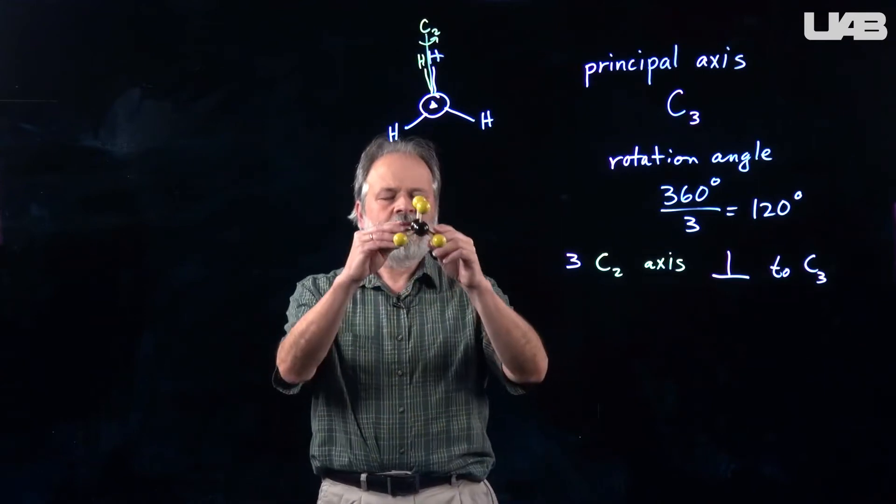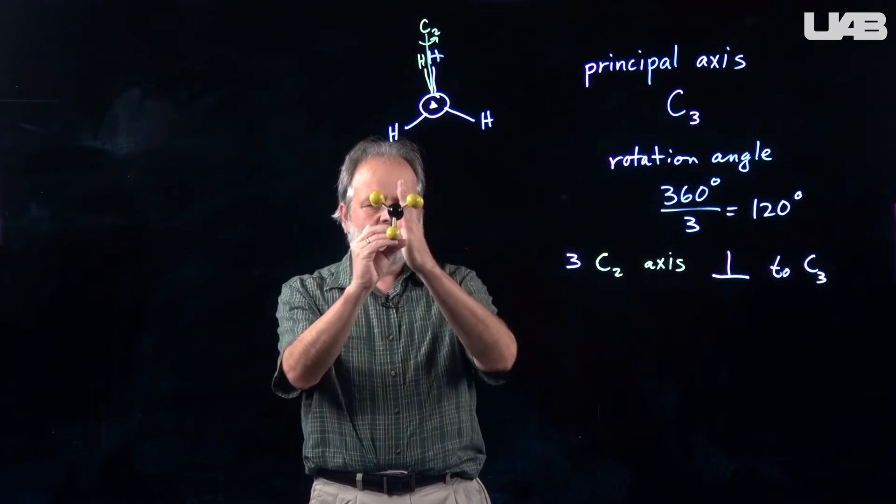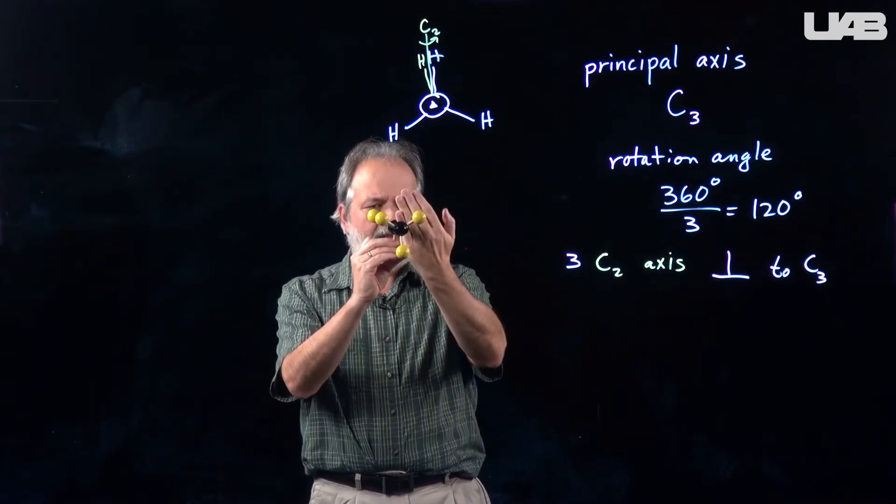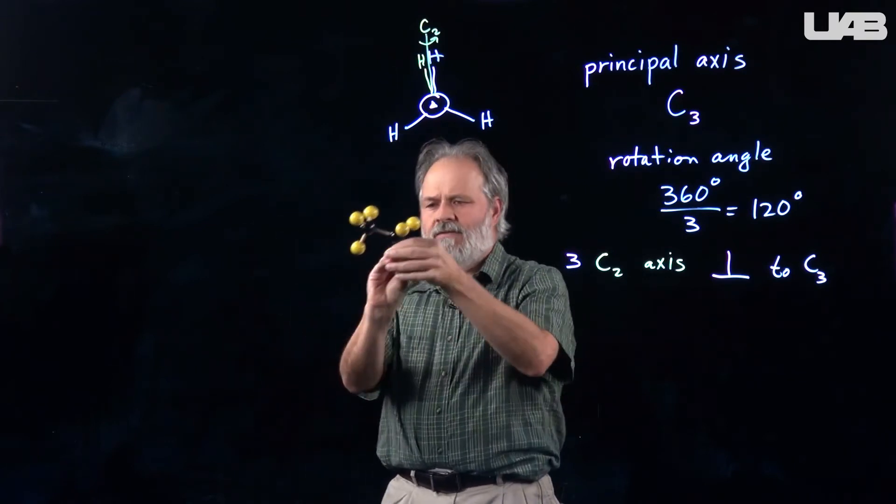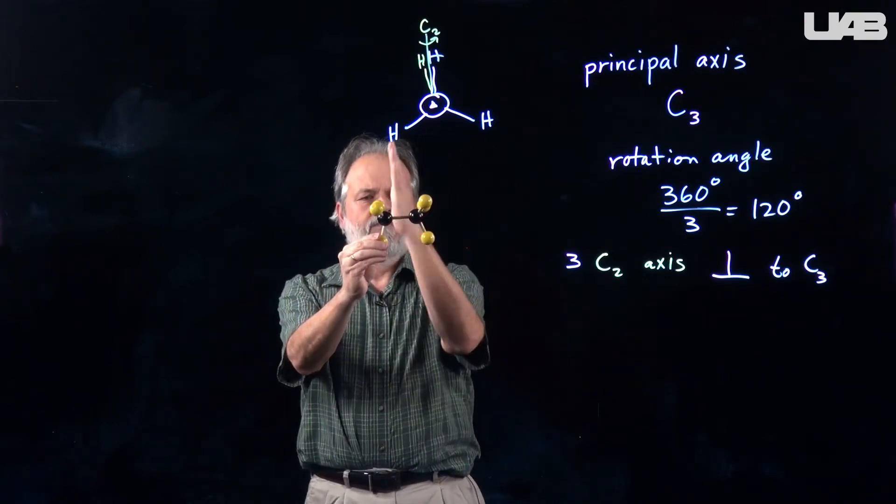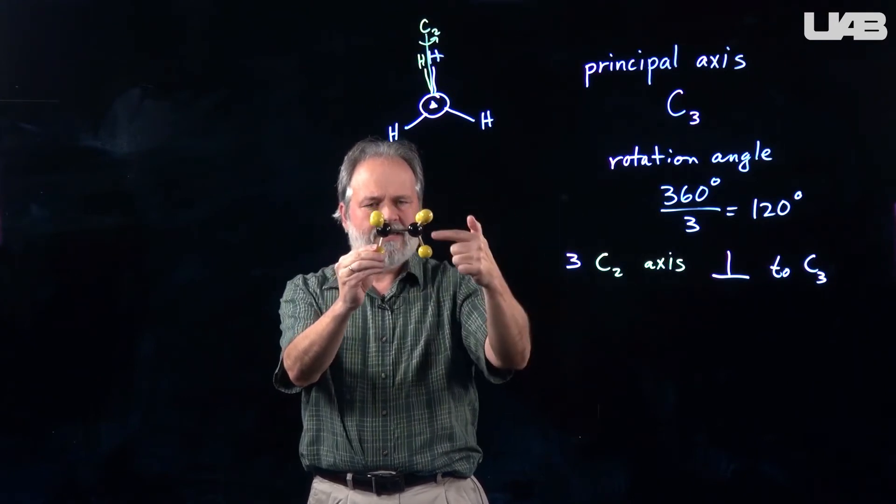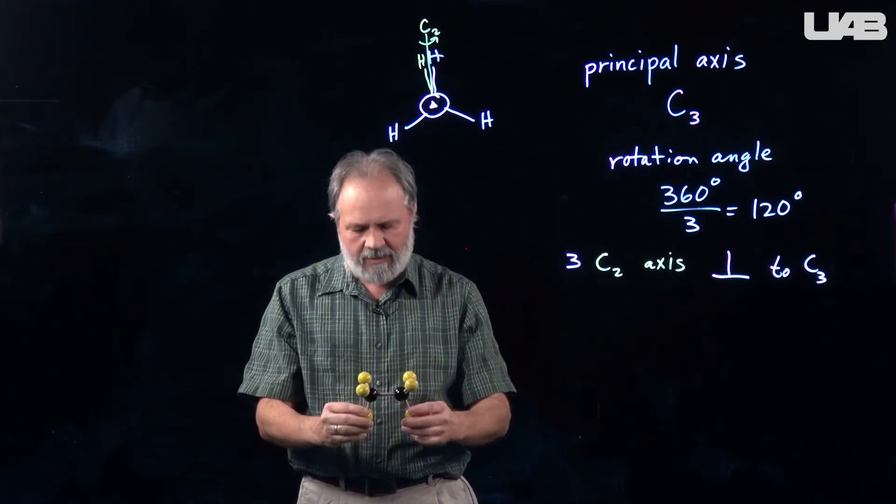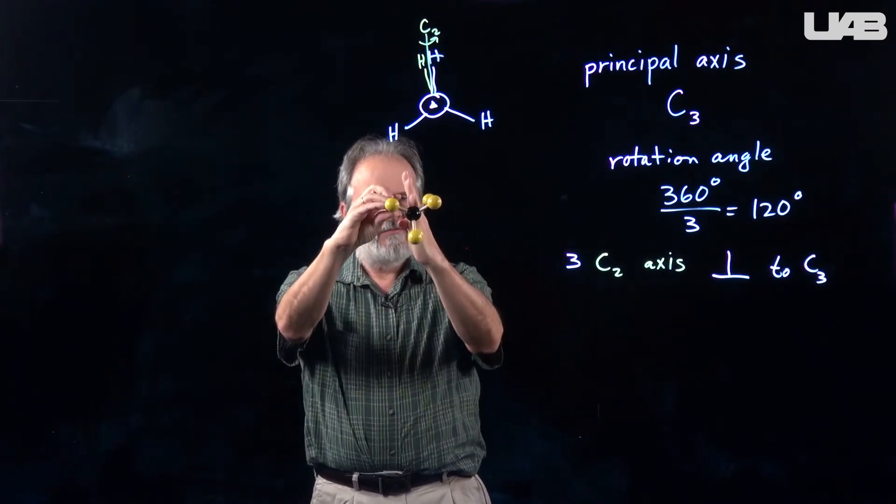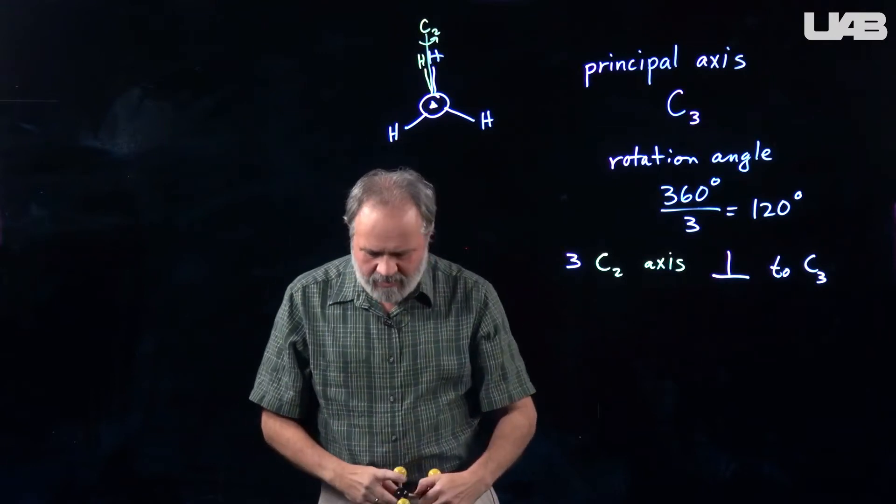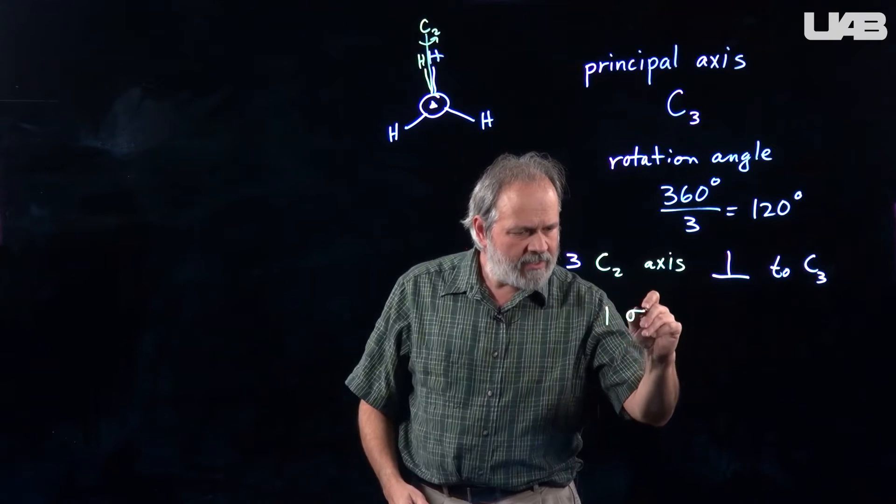So next, in the flow chart, it asks you various questions about do you see a horizontal plane? And there is a horizontal plane in ethane. If you take and look at it from the side, it has a mirror plane right here perpendicular to the C3 axis. And then it also has vertical planes here. There's three of them. And so we're just going to make a list of all the axes and planes that we have.